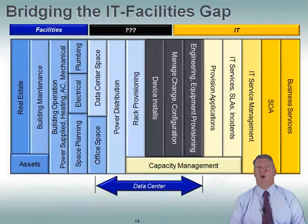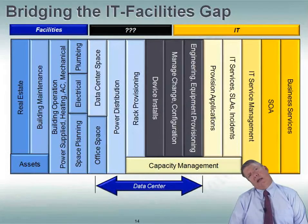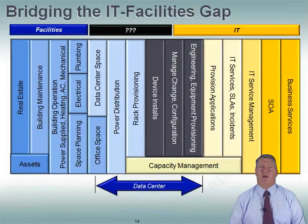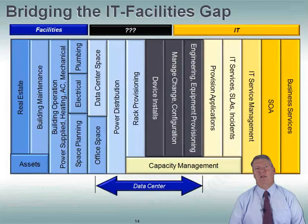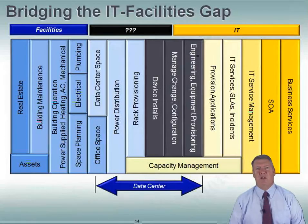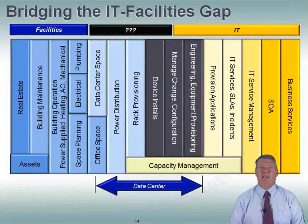This slide illustrates some of the issues with the IT/facilities gap. Over on the left in the blue, we see traditional facilities functions: building maintenance and operations, space planning, electrical and plumbing. Over on the IT side, we have business services, IT service management, and service level agreements. The middle area — where the lighter blue and black overlap — is kind of where the data center fits in. This is a gray area where sometimes facilities does the work, sometimes IT does. Who does device installs? Who does rack provisioning? Sometimes facilities, sometimes IT. We need to define those proper roles clearly.